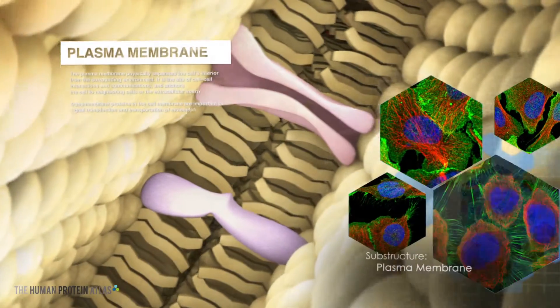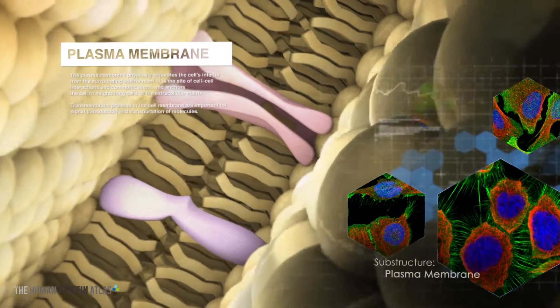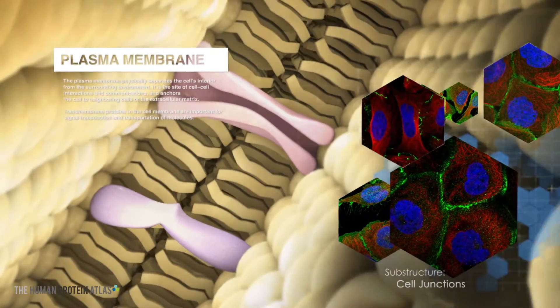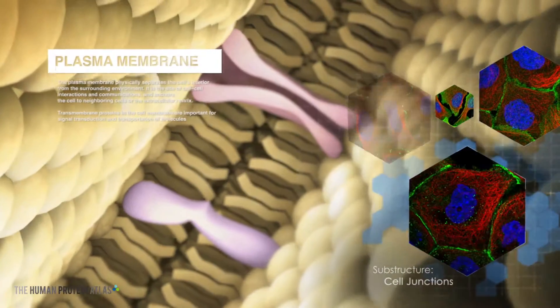By creating a physical barrier, it separates the cytosol and organelles of the cell from the surrounding environment. This is the site of cell-to-cell interaction and communication and anchors the cell to its surroundings.